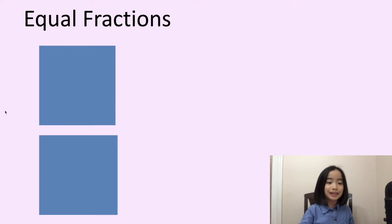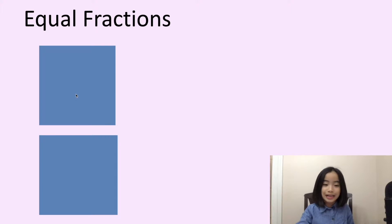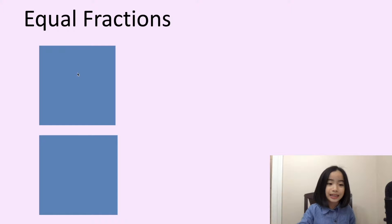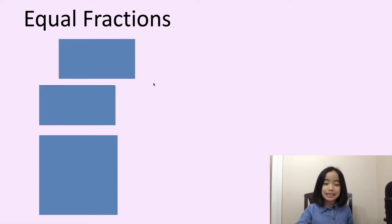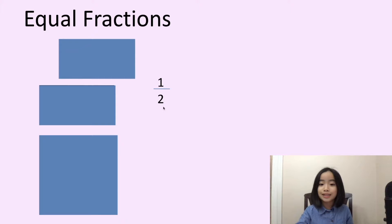Here are two squares. First, let's look at the first square. I am going to cut it in the middle, like this, and I took one piece away. This is known as one-second or one-half.